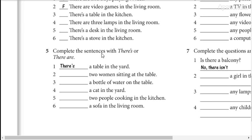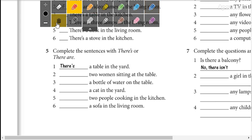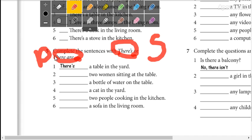Now in number 6, complete the sentences with there's or there are. Remember, there's is the contraction of there is. There are is plural. Si dice a table, entonces es singular, there's. There are is plural. No se olviden de eso.